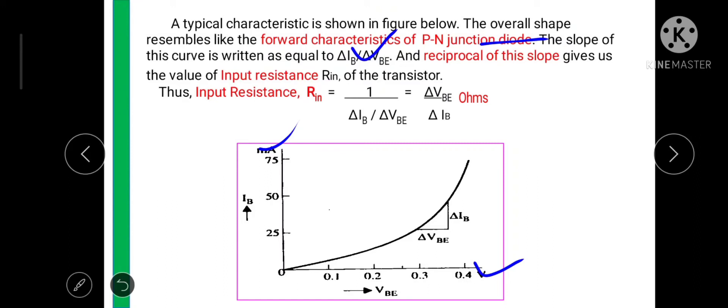Here we are interested in finding the input resistance of this transistor. So the reciprocal of this slope gives us the value of input resistance Rin of the transistor. So here we can write Rin equals to 1 upon delta IB upon delta VBE. And finally the same equation we can write like this Rin equals to delta VBE upon delta IB.